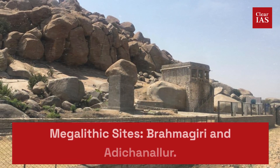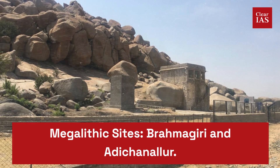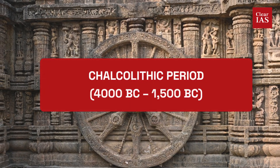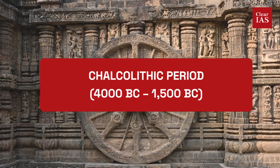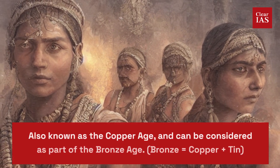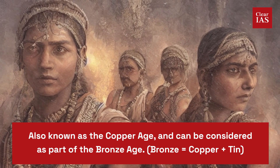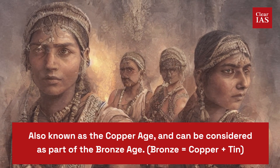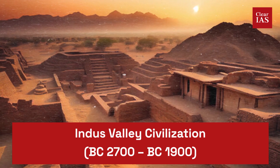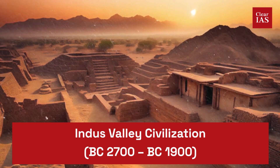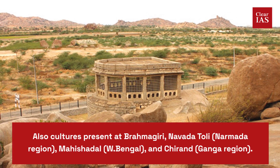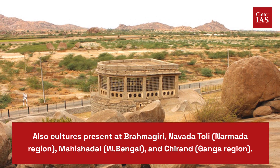Please note: the two important megalithic sites are Brahmagiri and Adichanallur. In the era from 4,000 BC to 1,500 BC, we see the Chalcolithic period, also known as the Copper Age, which can be considered a part of the Bronze Age. The Indus Valley Civilization also belonged to this era, from 2,700 BC to 1,900 BC. Cultures present at Brahmagiri, Navadatoli, Maheshwar, and Chirand also belong to the Chalcolithic period.